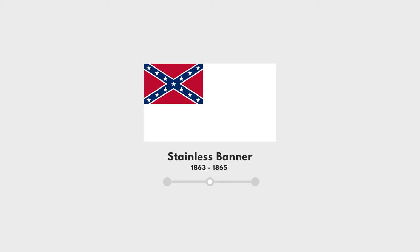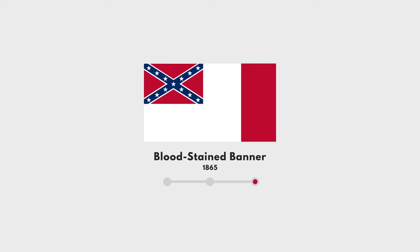The final flag of the Confederacy came on March 4, 1865, just a month before the surrender of Robert E. Lee. The final flag design added a short red stripe to the end to avoid that whole no-wind surrender problem. However, very few of these flags were ever manufactured, and many Confederate soldiers never actually saw them in combat. So the traditional X design associated with the modern Confederate flag is actually a regimental flag for the Northern Army of Virginia.